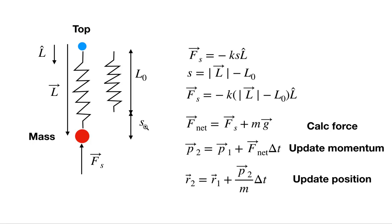The key thing is I need this as a vector force, so I can't just use negative k*s — that's not a vector. We'll define the vector L from the top point down to the mass (like a position vector), and L-hat as the unit vector in that direction. The spring force is negative k times s times L-hat, where s equals the magnitude of L minus L0.